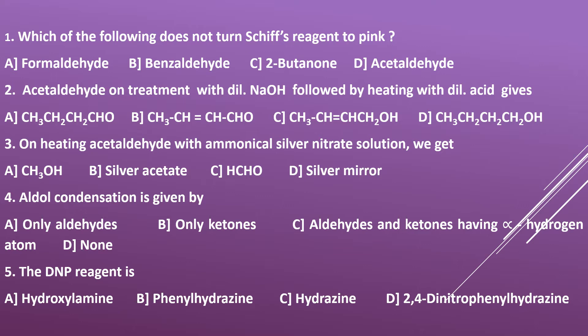This alpha,beta-unsaturated aldehyde is also called crotonaldehyde. Question number three: on heating acetaldehyde with ammoniacal silver nitrate, we get — options: A) CH3OH, B) silver acetate, C) HCHO, D) silver mirror. Ammoniacal silver nitrate is Tollen's reagent. This test is called the silver mirror test. When acetaldehyde is heated with Tollen's reagent, we observe silver mirror depositing on the inner walls of the test tube. The answer is D, silver mirror.